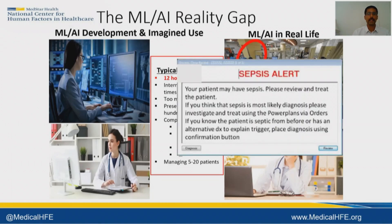When that kind of alert comes at the point of implementation, it might look something like this: 'Your patient may have sepsis. Please review and treat the patient. If you think that sepsis is the most likely diagnosis, please investigate and treat using the power plans via orders. If you know the patient is septic from before or has an alternative DX to explain the trigger, please diagnose using the confirmation button.' That's a lot — and most likely what the individual is going to do is simply dismiss this alert.